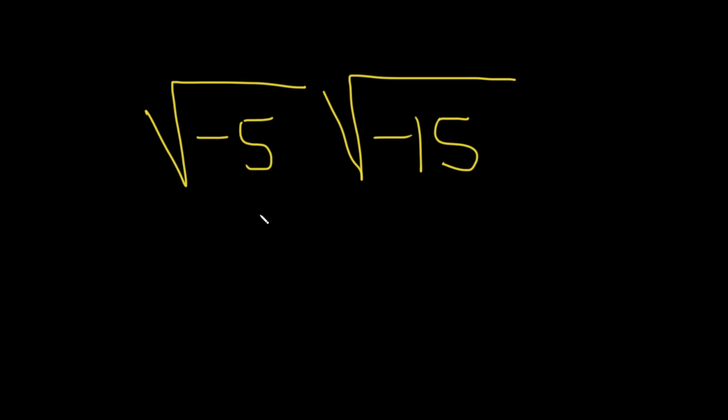So one thing you want to make sure that you don't do is just start multiplying right away. Basically, you're not allowed in general if you have the square root of a times the square root of b, that's not equal to the square root of a times b. It doesn't always work.